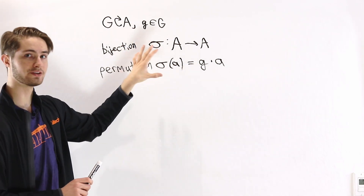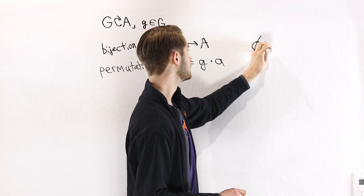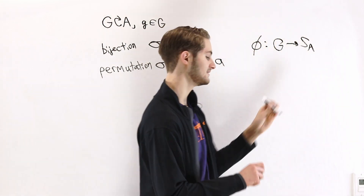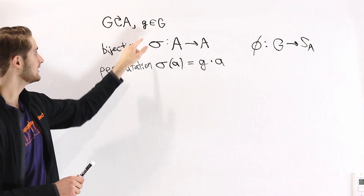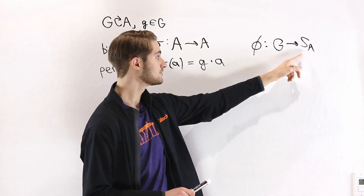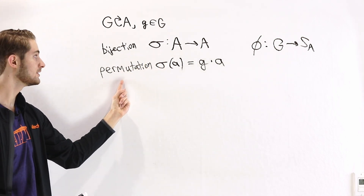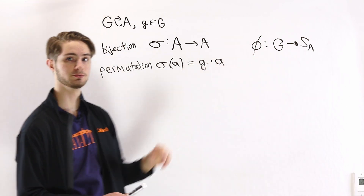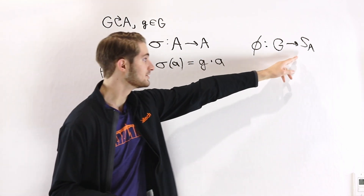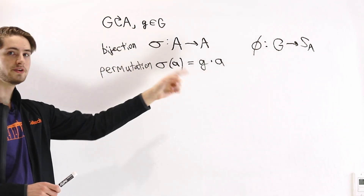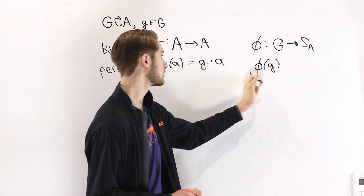Let's consider a map like this but for an arbitrary element g in the group. It's going to look like φ going from the group to the symmetric group on the set A. This map φ is a function that takes in an element of the group and describes what the permutation σ is — what this bijection is for that specific element of the group. A permutation on the elements of A is by definition an element of the symmetric group on A, so φ associates every group element with some φ(g), which is a permutation.